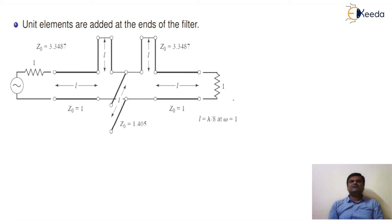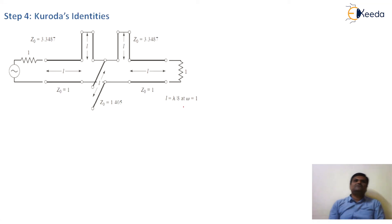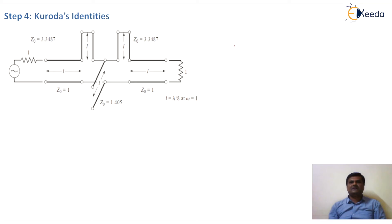After Richards transformation, we have extra unit elements added at the starting and end of the filter, each with impedance J0 equal to 1. To handle these properly, we use Kuroda's identities. This design using Richards transformation requires Kuroda's identities for proper design.